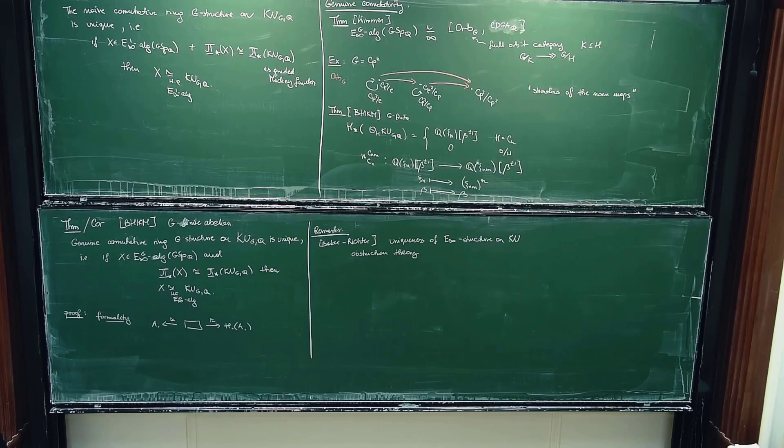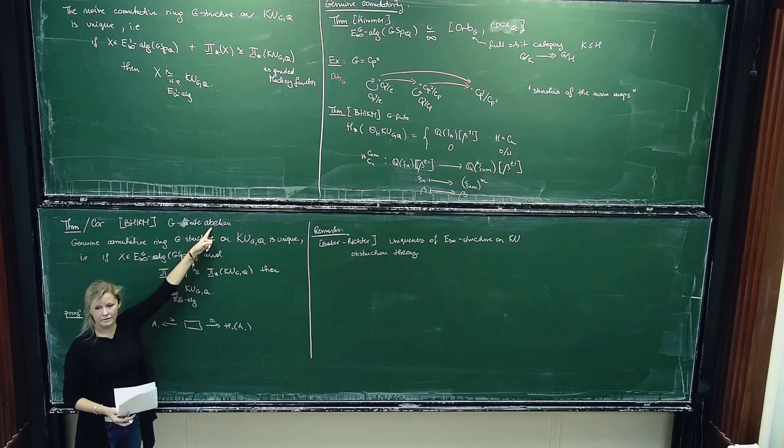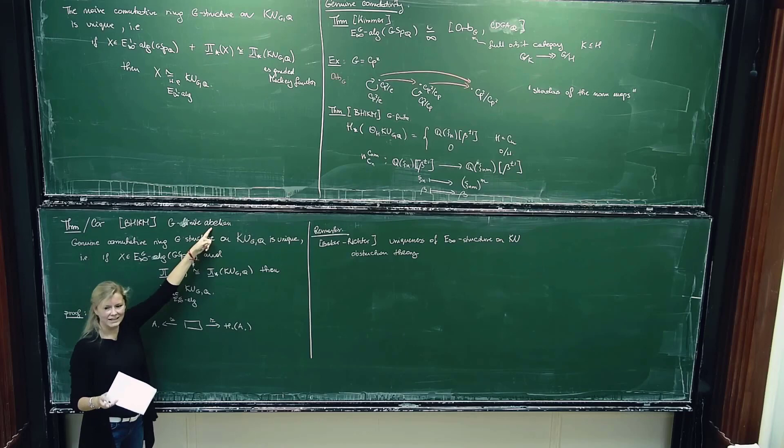Is the theorem possibly still true for arbitrary finite G? For arbitrary finite G, I cannot prove it — whether the theorem is true or not is a separate question from whether we can prove it. I think yes, it's probably true; K-theory is as good as it gets.